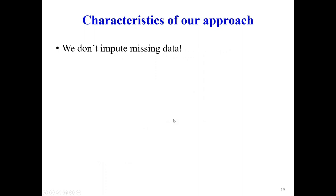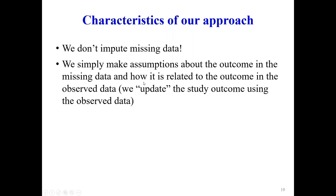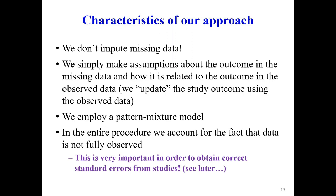Generally, we do not include any missing data. We just make assumptions about the outcome of missing data and how it is related to the outcome of the observed data. We use a class of model which is very popular for missing data called the pattern mixture model. Unlike other methods, we account for the fact that data are not observed but imputed.